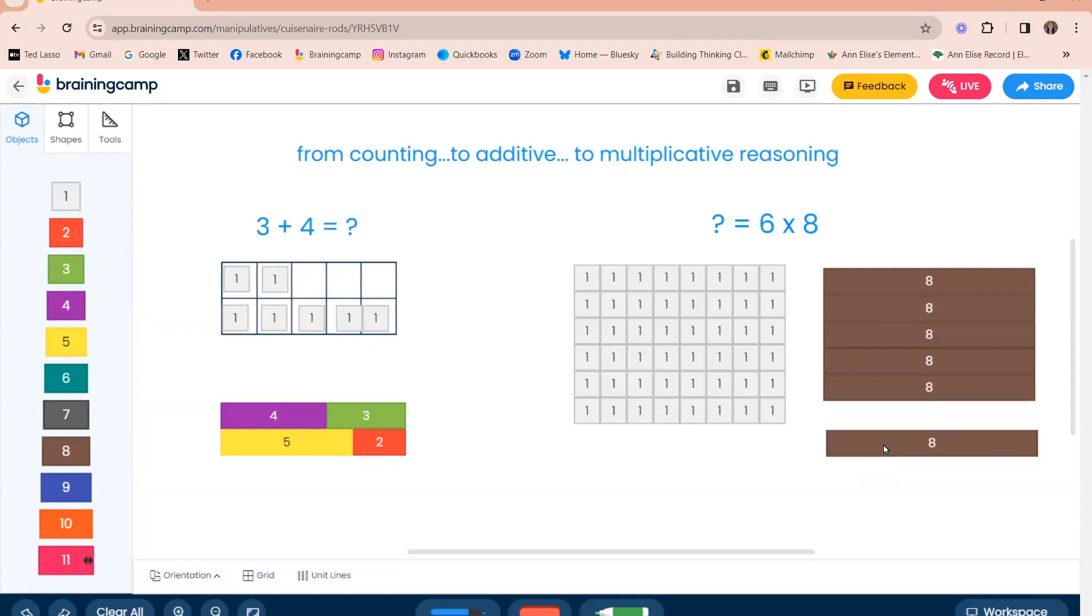Other students may say, well, I know that five eights is 40. So one more eight is 48. Although I've seen students combine that multiplicative reasoning with some counting by telling me that they know five eights is 40, and then they count on that last eight one by one.